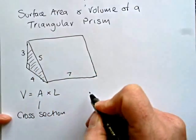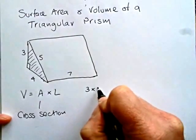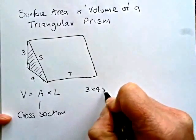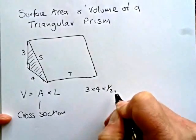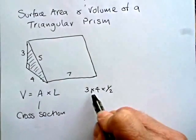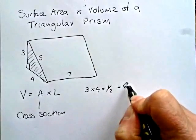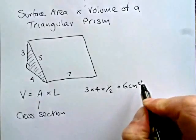So first of all we work out the area of the triangle. Now the triangle has a height of 3 and a base of 4, and we must times that by half. That's often forgotten and leads to a mistake and loss of marks. So 3 times 4 is 12 times a half is 6. So that would be 6 centimeters squared.